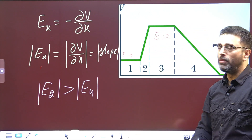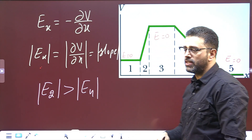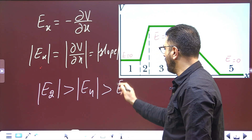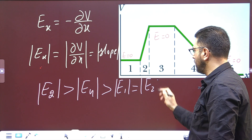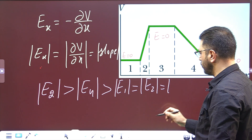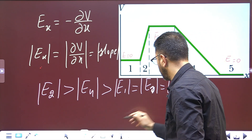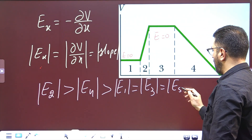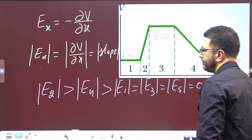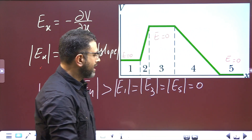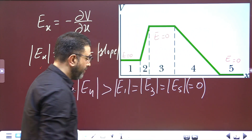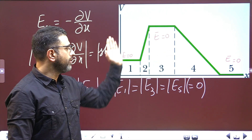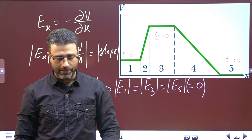Because region 2 has the greater slope, its field magnitude is greatest. The rest of the regions — 1, 3, and 5 — have a field of 0. So the ranking is: region 2 is greatest, then region 4, then regions 1, 3, and 5 are all equal at 0 magnitude.